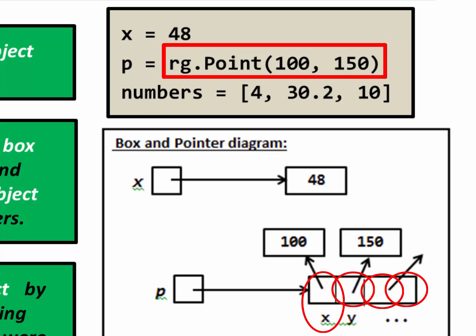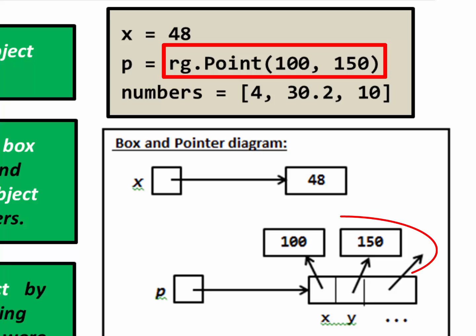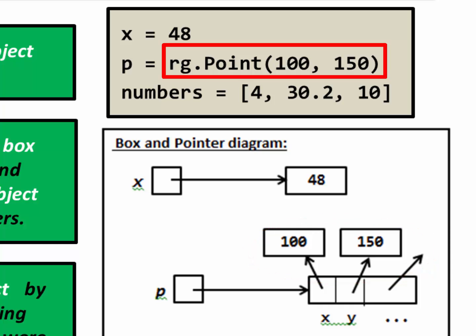We treat each sub-box as if it was a box for a variable. So we put the instance variable x beside one of them, the instance variable y beside another. If the picture were more complete, we'd have a box for the fill color with fill color listed underneath. Each of those sub-boxes has arrows to the values — so x refers to the non-container object 100, y refers to 150, and so forth.